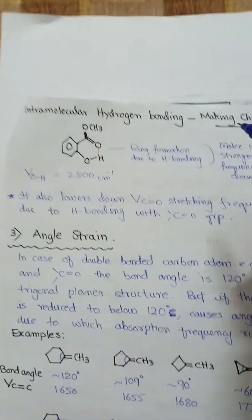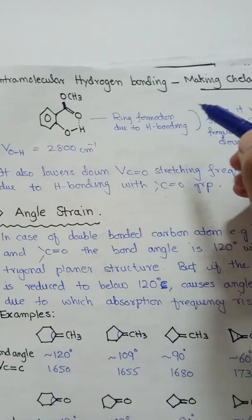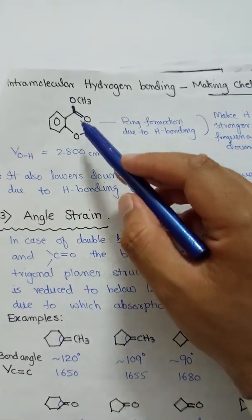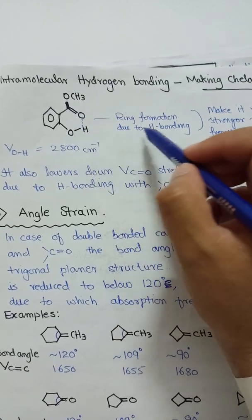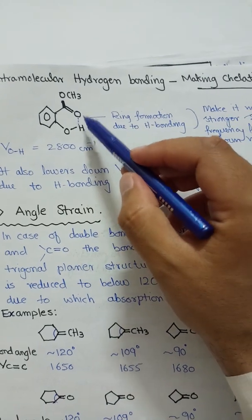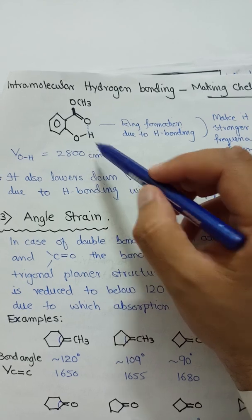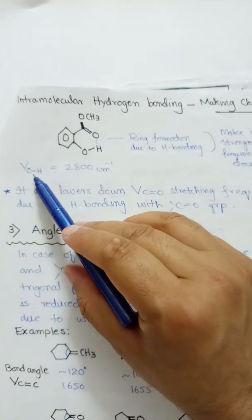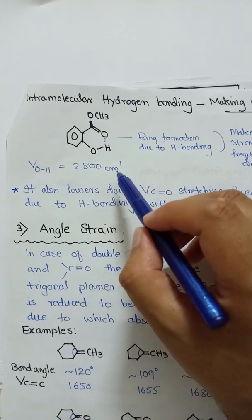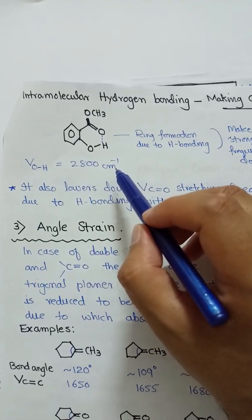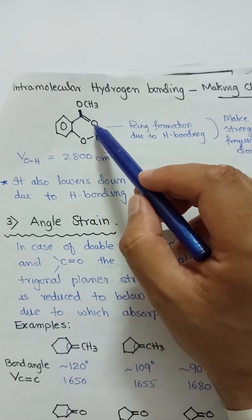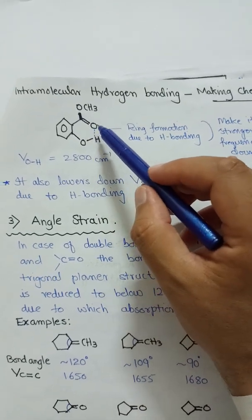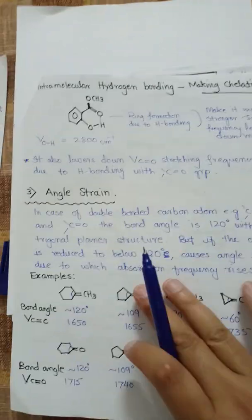Sometimes intramolecular hydrogen bonding occurs with chelation, and this hydrogen bonding is much stronger than intermolecular hydrogen bonding. The intramolecular hydrogen bond forms a ring, making it chelation. In this case, the O-H bond stretching appears at 2800 cm⁻¹, so the absorption frequency is decreased even more due to the stronger hydrogen bonding. It also affects the carbonyl C=O stretching vibration and decreases that frequency as well.